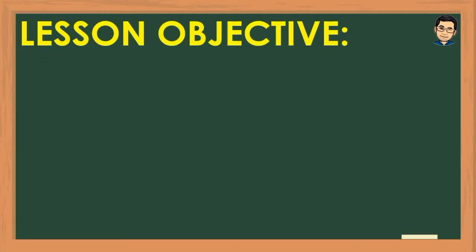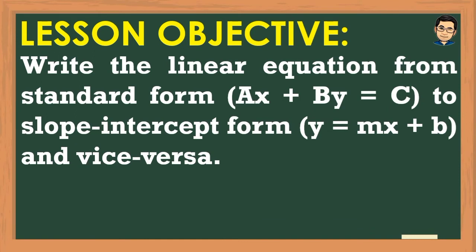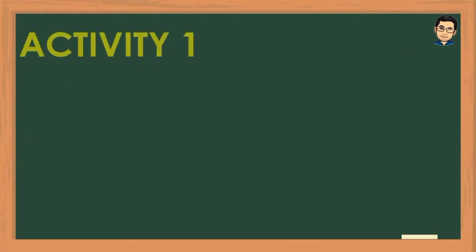For our lesson objective, we will write the linear equation from standard form ax + by = c to slope-intercept form y = mx + b, and vice versa. We will transform equations from standard form to slope-intercept form, and then from slope-intercept form to standard form.